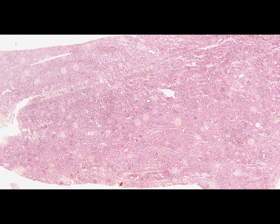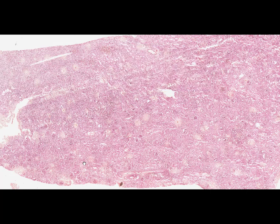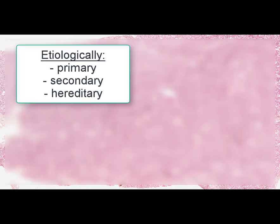On this slide we can see a kidney, stained by hematoxylin and eosin. The name of this slide is extracapillary proliferative glomerulonephritis. By definition, glomerulonephritis is a bilateral diffuse or focal non-purulent inflammation of the renal glomeruli resulting in renal or extra-renal manifestations. There are few types of glomerulonephritis according to etiology.